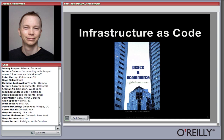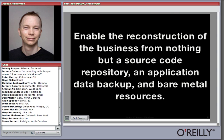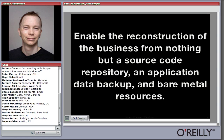When we talk about infrastructure as code, this is the automation that we use with Chef. We write the code and Chef uses it to automate various aspects of the system. The dry academic definition might go something like this: it is a technical domain revolving around building and managing infrastructure programmatically. But really what it means is we need to enable reconstruction of the business from nothing but a source code repository, the application backup, and bare metal resources — either physical systems in a rack or cloud systems provisioned via an API call.